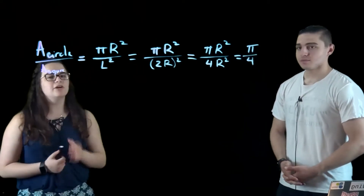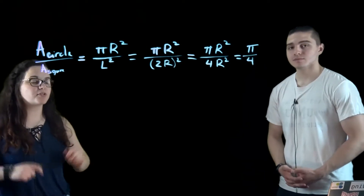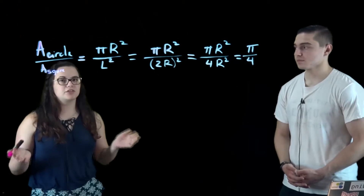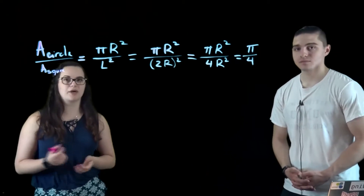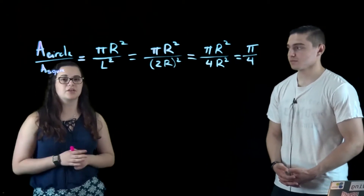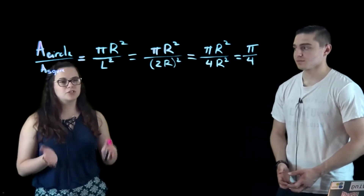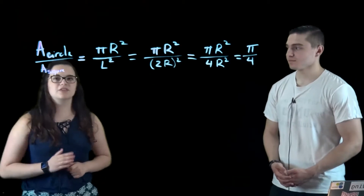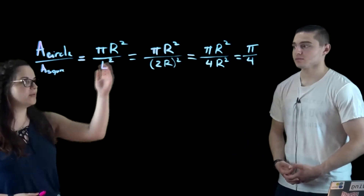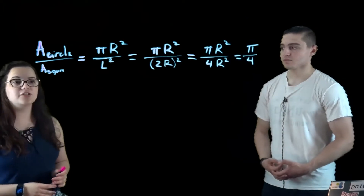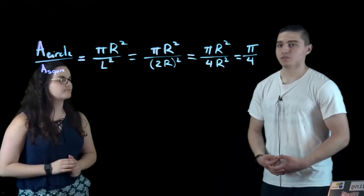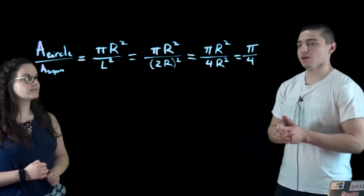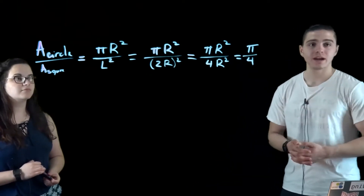Pi over 4 is actually roughly 75%, which isn't hard to believe because we know that this ratio is supposed to be less than 1. If it were more than 1, it would mean that the area of the circle is bigger than the square, which is not true since the circle is inside the square. We know that the area of the circle to the area of the square equals pi over 4. So to find pi, all we have to do is multiply our answer by 4, and we get pi.